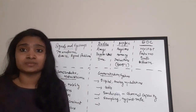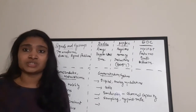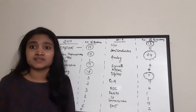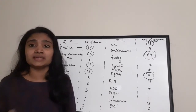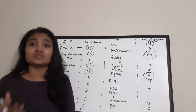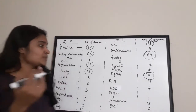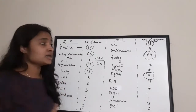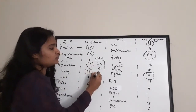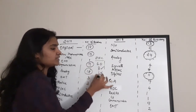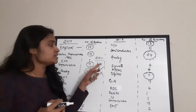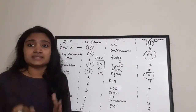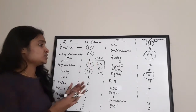Now let us see the mark division for each subject from previous year Technical Assistant examinations. First, regarding the exam pattern: for the HSFC location there are 60 questions, with 3 marks for each correct answer and -1 mark for each wrong answer, making it a total of 180 marks.